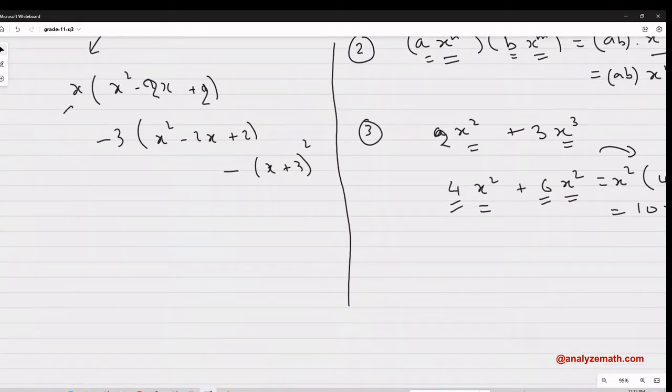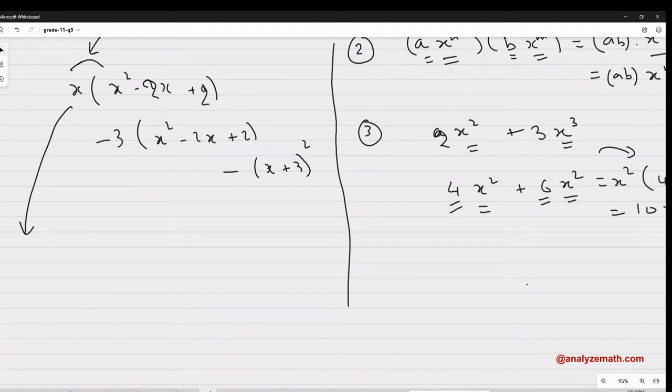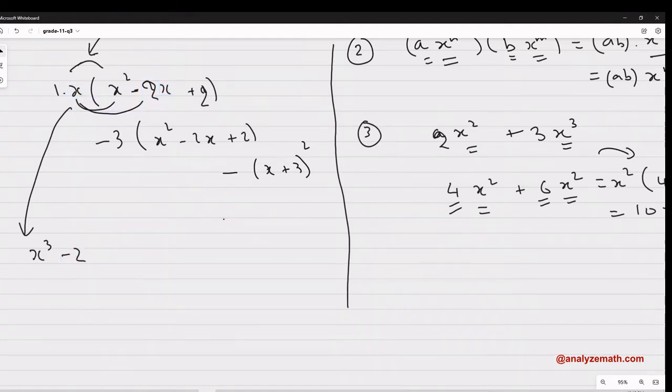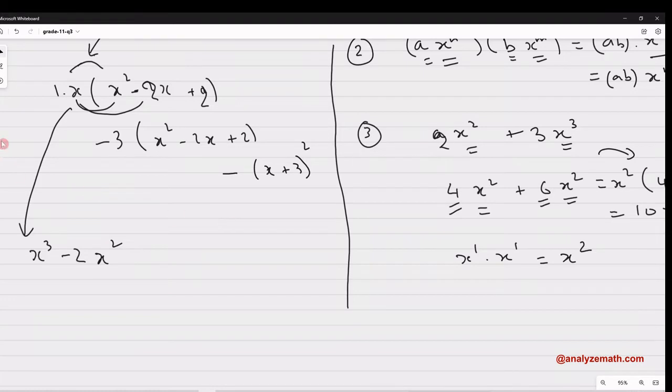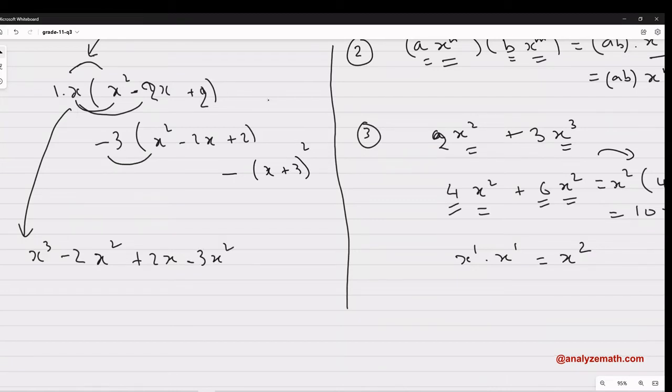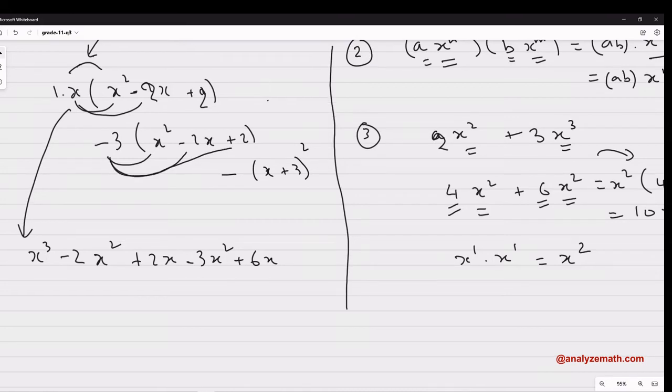Now we continue and distribute again, x over this. So x by x², that gives me x³. x by minus 2x, remember when we say x it's one multiplied, so one multiplied by minus 2 gives me minus 2, and this x with this x gives me x². When you multiply x by x, this is like one here, so when you add one and one gives you x². Now x multiply by 2, that gives you 2x. We continue, minus 3x². Minus 3 by minus 2, that gives me plus 6x, and then minus 6.